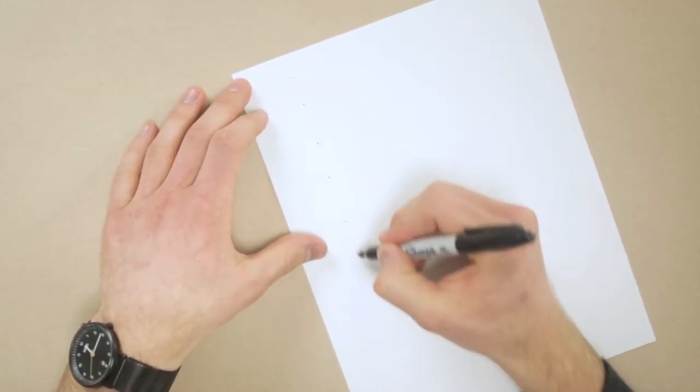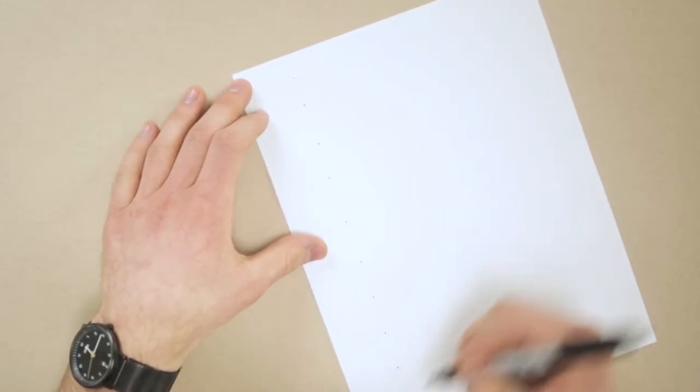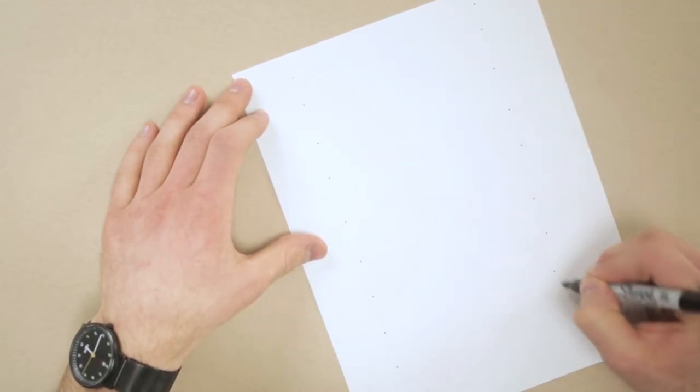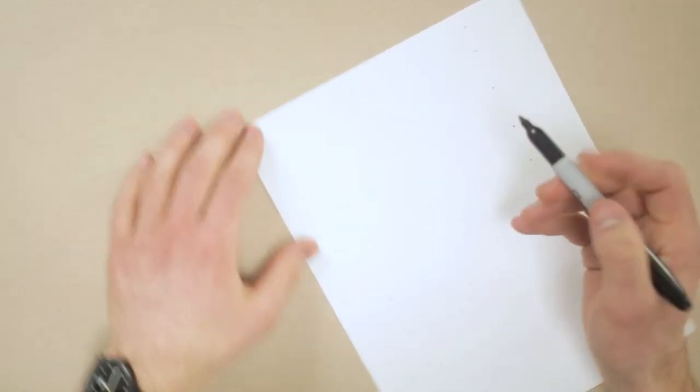A great way to practice this is putting a few dots on a piece of paper and practicing connecting them. When you do this over and over again, your lines will go where you want them. They'll be cleaner and they'll be faster.